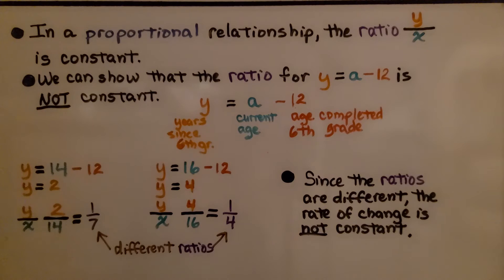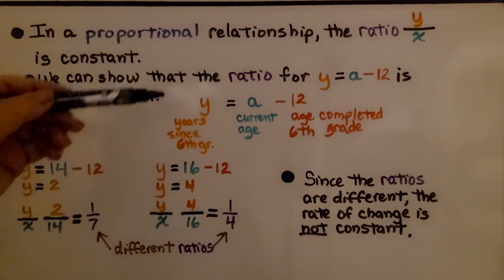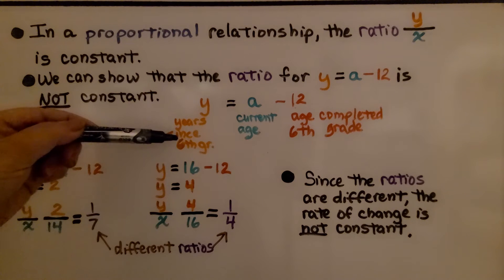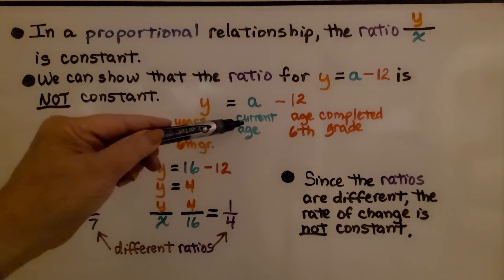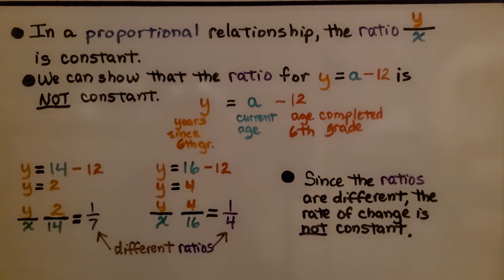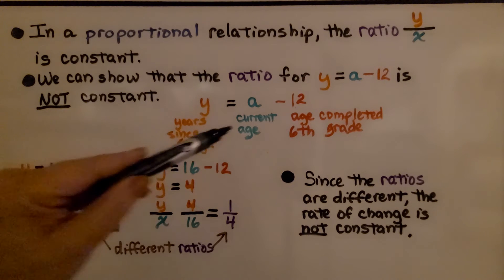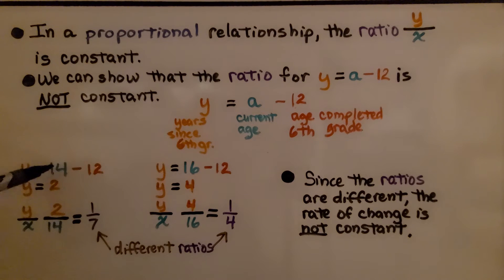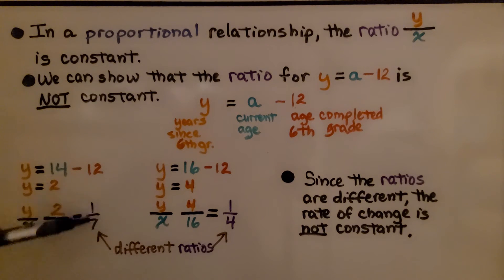In a proportional relationship, the ratio y to x is constant. We can show that the ratio for y equals a minus 12 is not constant. Y is the years since she was in sixth grade, a is her current age, and negative 12 is the age at which sixth grade was completed. If we put 14 as her current age, then y equals 14 minus 12, which equals 2. Our y to x ratio would be 2 to 14, which equals a 1 to 7 ratio.